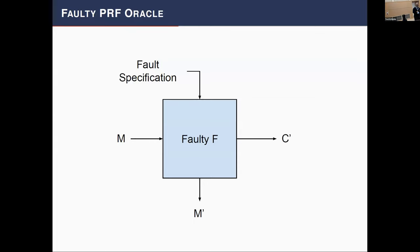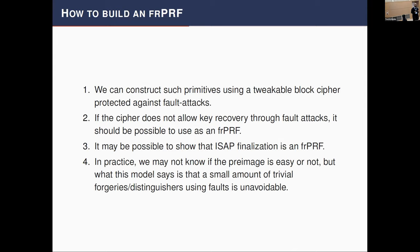To implement the faulty oracle we assume a faulty PRF implementation description and a fault specification based on the computing platform. It returns c' and, if possible, m'. In the ideal world it terminates if more than one m' value is leaked. We can build this construction using a two-equal block cipher protected against fault attacks. We also think the ISAP finalization may satisfy this FR-PRF definition.